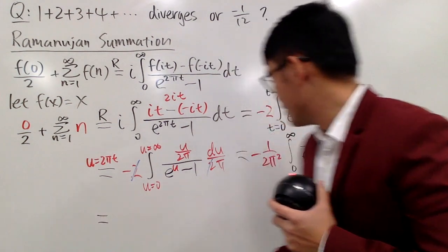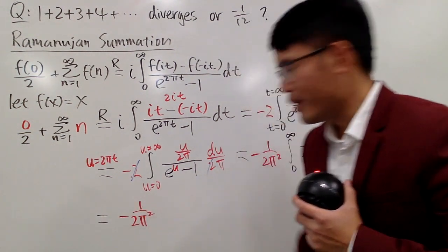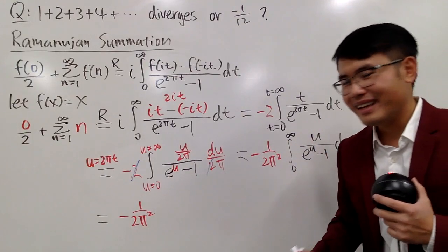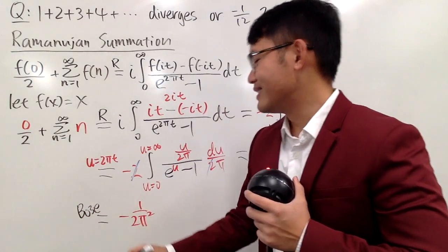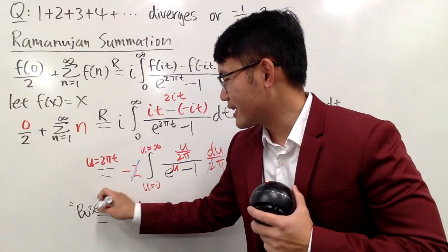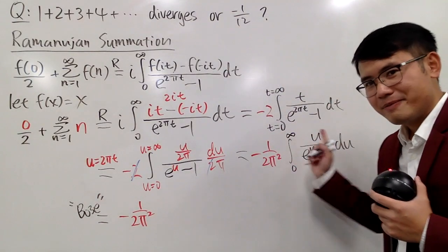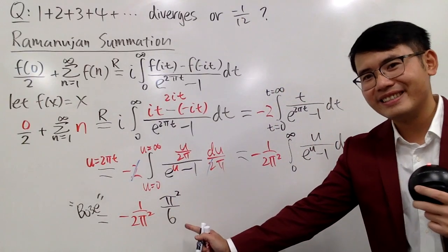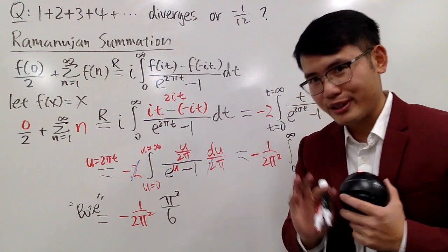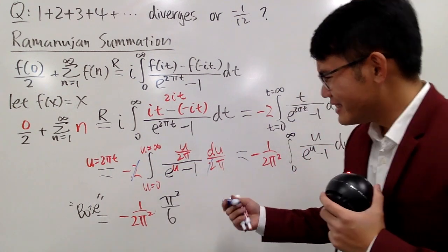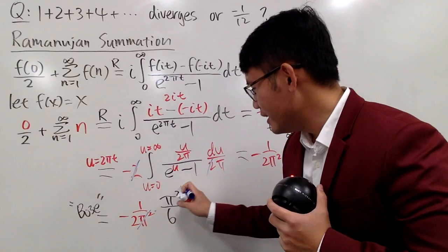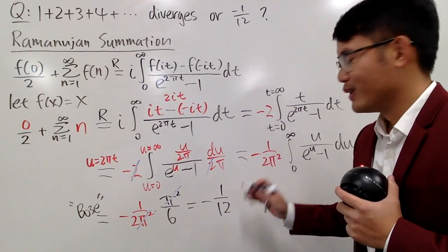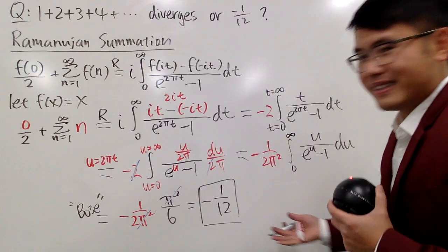For this integral, in fact, I have a video on this already. This is called the boss integral. So, you're going to check that out. This is equal to a famous number, pi squared over 6. I didn't make this up, check out the video. This is equal to that. And from here, yes, you can see that the pi squared cancel each other precisely, and then just do a little multiplication, you end up with negative 1 over 12. Just like that.